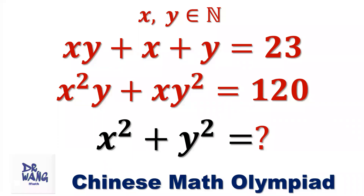Hello everyone, I'm Dr. Wen. Here is the question. If x, y are positive integers, x times y plus x plus y equals 23, x squared times y plus x times y squared equals 120, what is the value of x squared plus y squared?